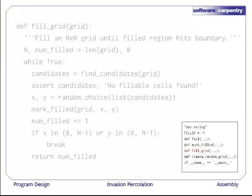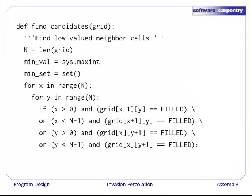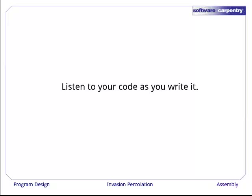Again, the box on the lower right shows where this function fits in the file. One more function. find_candidates finds low-valued neighbor cells and returns them as a set. N is initially assigned the length of the grid. min_val and min_set are initialized, as discussed in an earlier episode. And then we loop over x and y coordinates, checking to see if the neighbors of the cell we're looking at are already filled. Now, we're going to stop right there. This code is already hard to read. In fact, it contains a bug. That y plus 1 should be y minus 1. But you probably didn't notice that because there was too much code to read at once. A good rule of thumb is, listen to your code as you write it. If the code is difficult to understand when read aloud, then it's probably going to be difficult to understand when you're debugging. So you should try to simplify it.